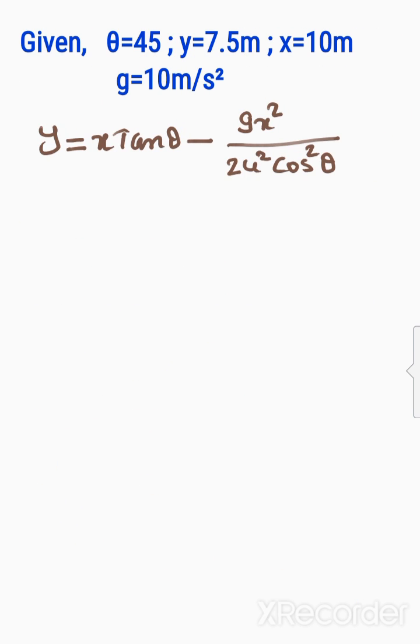Now solving the question. We have vertical displacement 7.5 equals to 10 tan 45° minus g which is 10 times x which is 10 whole square divided by 2u²cos²θ.